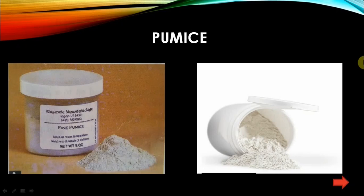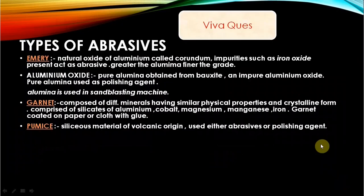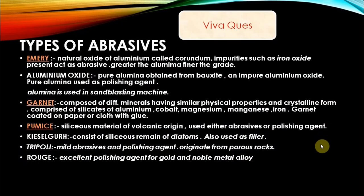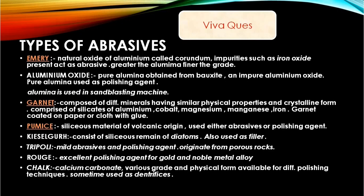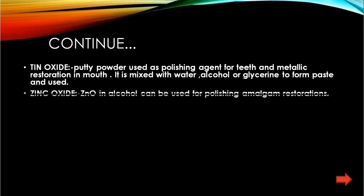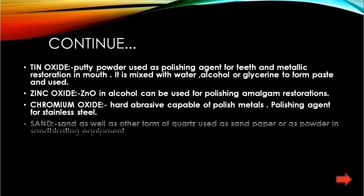Pumice is a siliceous material of volcanic origin, used either as an abrasive or polishing agent. Rouge is an excellent polishing agent for gold and noble metal alloys. Chalk — calcium carbonate — is used as a dentifrice. Tin oxide, zinc oxide, and chromium oxide are also used. Sand and other forms of quartz are used as sandpaper or as powder in sandblasting equipment.